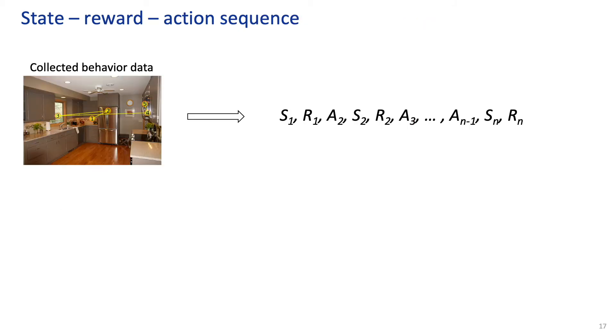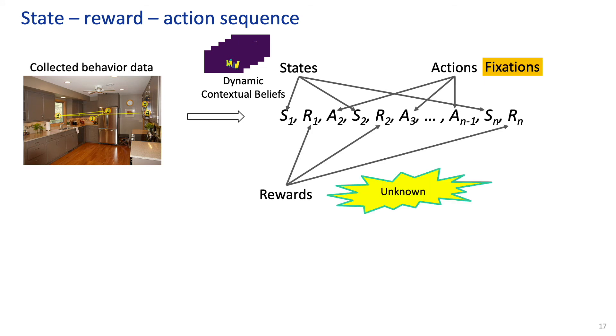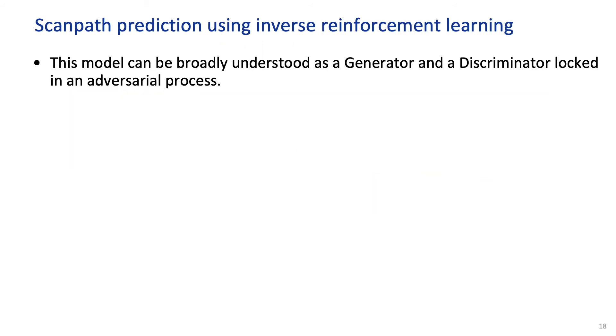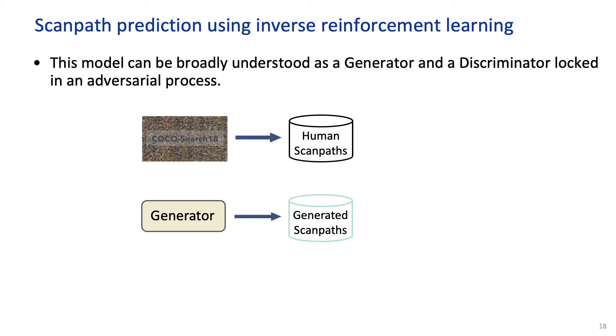Back to our problem formulation, now we have the state and actions, but what are the rewards? We propose to learn the reward by using inverse reinforcement learning. Our model adopts the popular adversarial training framework with the generator and the discriminator. During training, the generator will generate scan paths with the goal of fooling the discriminator into believing that they come from a person. The discriminator tries to tell which are the human scan paths and assigns them greater rewards. Then the generator will update itself and try to generate more human-like scan paths. This process repeats until convergence.